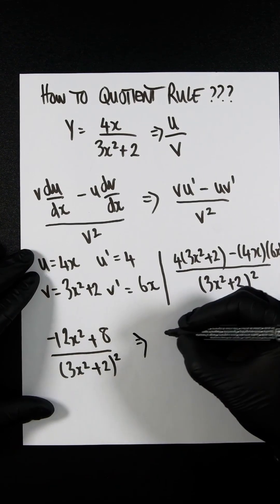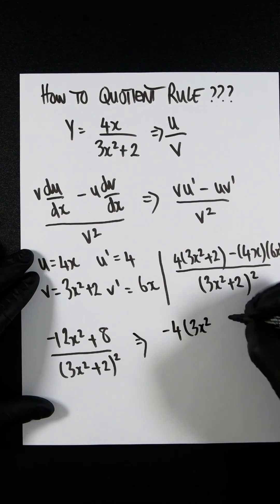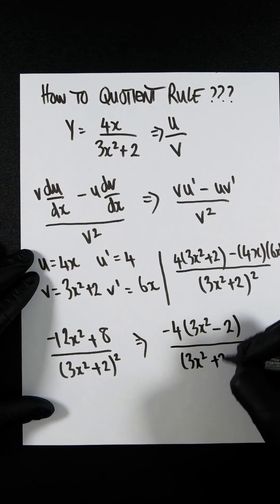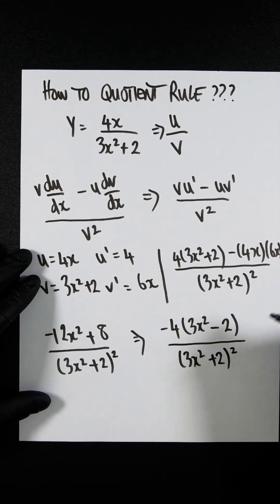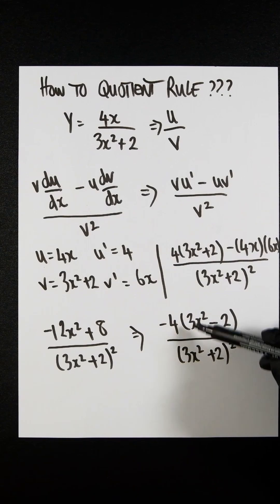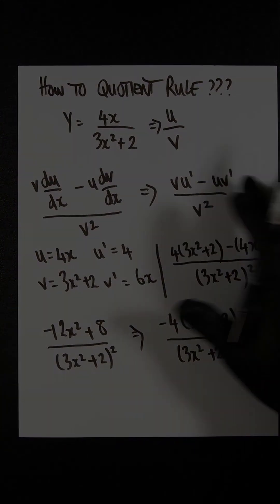Now we can factorize the top. So we'll get minus 4 times 3x squared minus 2, all divided by 3x squared plus 2 squared. It would be great if this was also a positive, because then it would cancel out, and you would actually have minus 4 over 3x squared plus 2. But it isn't, and that has been successfully differentiated.